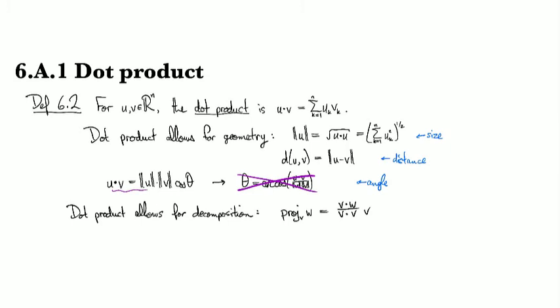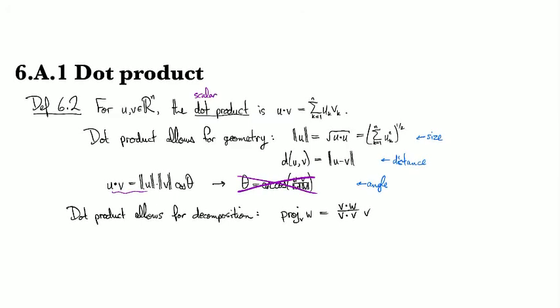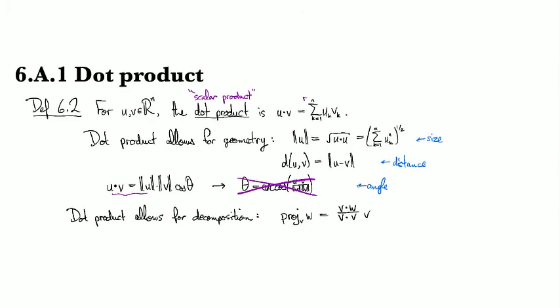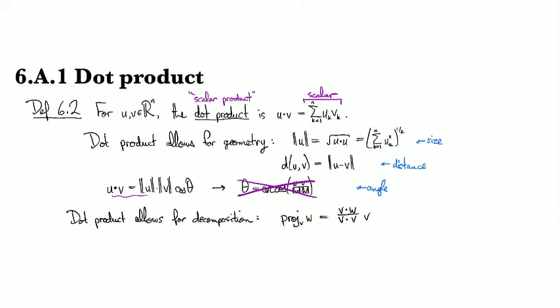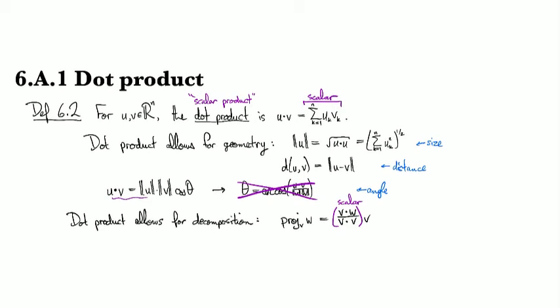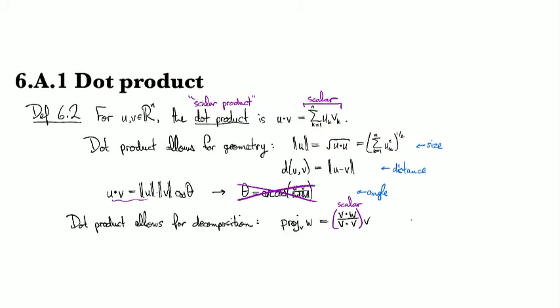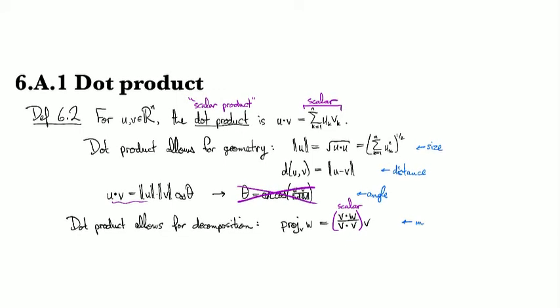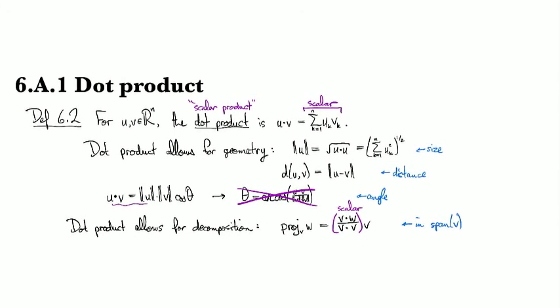I forgot to mention one other thing, and that is that the dot product is sometimes called the scalar product. The reason for that is that this thing right here, you can see this is definitely a scalar value. This quantity right here in parentheses is a scalar. So this is the scalar multiple of v. And so that tells you that this resulting vector is in the span of v. In other words, it's parallel or anti-parallel to v, it's a scalar multiple of it.